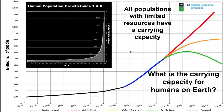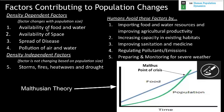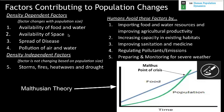There are many factors contributing to population changes. We have two major categories: density dependent factors, which change with population size and will continue to amplify and get worse in many ways, and density independent factors, where the factors don't really change based on population size. Density dependent things include availability of food and water, space, spread of disease, and pollution — problems that all get worse as population density increases.